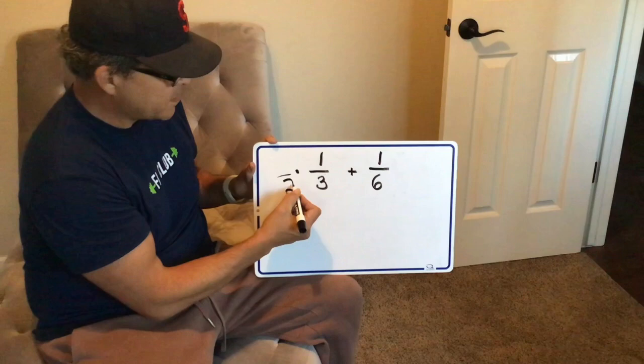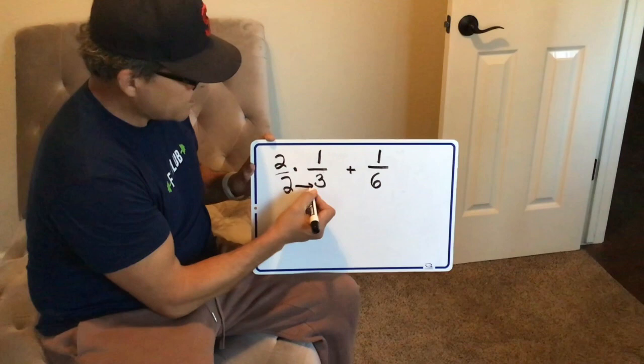So to make 6, I multiply this fraction by 2 over 2, which is really 1.